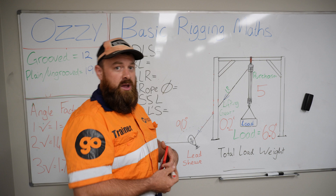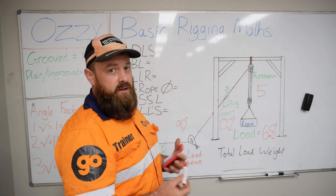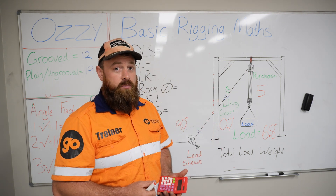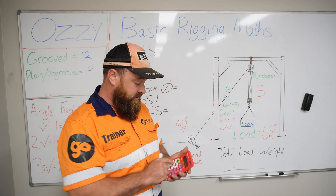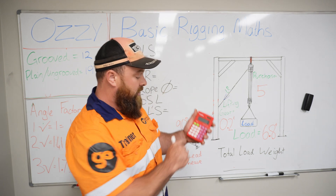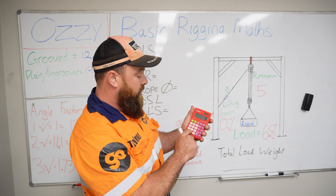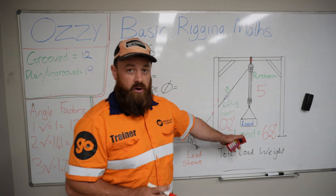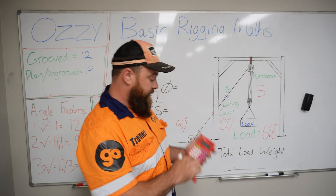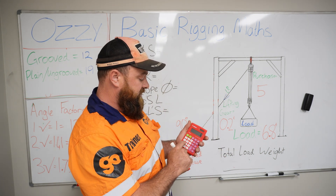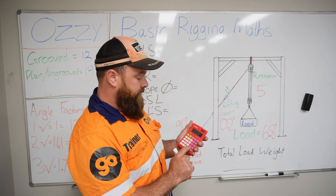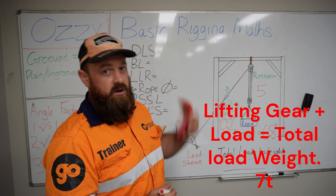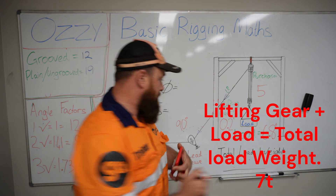The first thing we want to do is calculate the weight of the lifting equipment, which is 0.2 tonnes or 200 kilos, plus the weight of the load by itself, which is 6.8 tonnes. That gives us a total load weight of 7 tonnes.